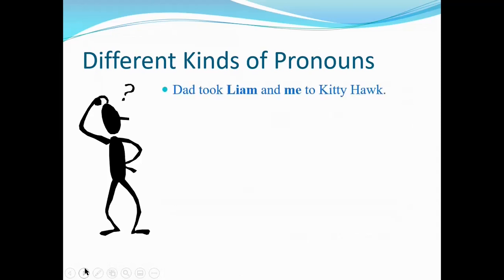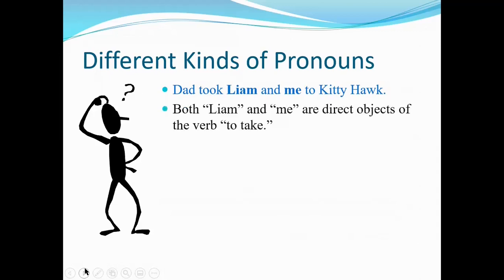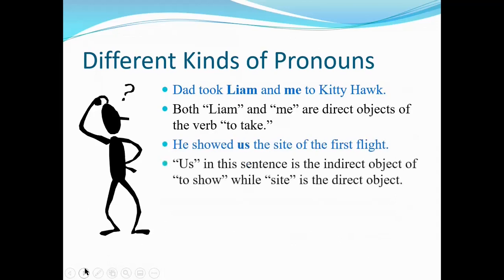Here are some examples. 'Dad took Liam and me to Kitty Hawk' — Liam and me are the direct objects of 'take.' 'He showed us the sight of the first flight' — 'us' is the direct object of 'show,' and 'sight' is also a direct object. 'He showed to us the sight of the first flight.'